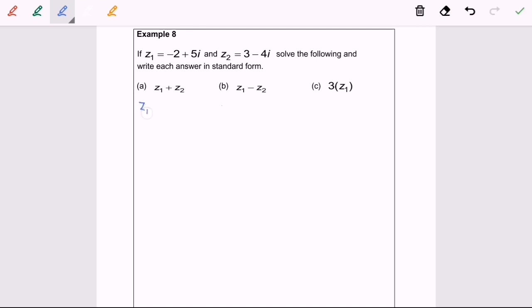z sub 1 plus z sub 2 equals negative 2 plus 5i plus 3 minus 4i. Now we have to refer to the real part. By simplifying the situation we have 1.